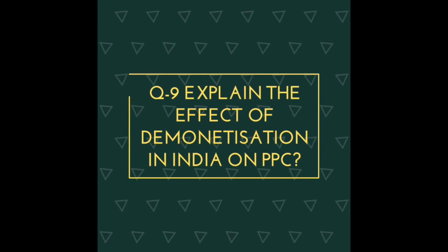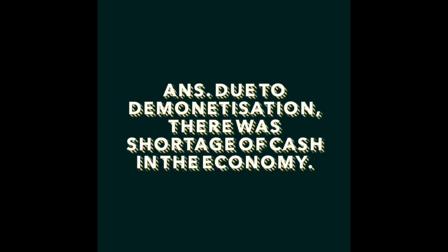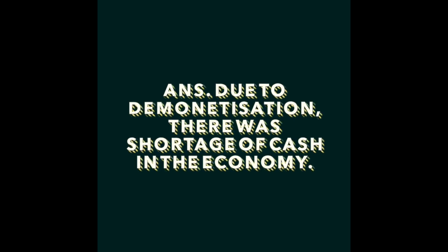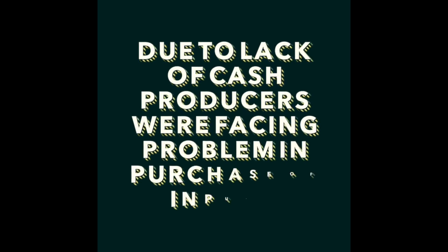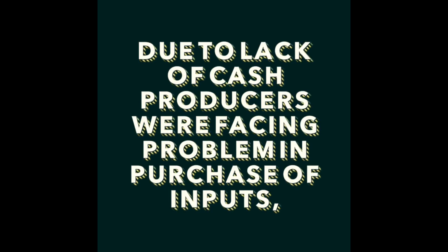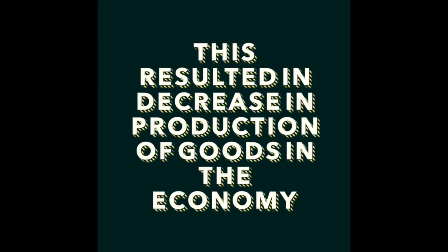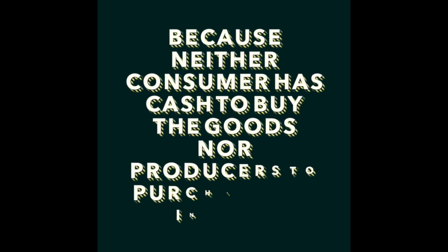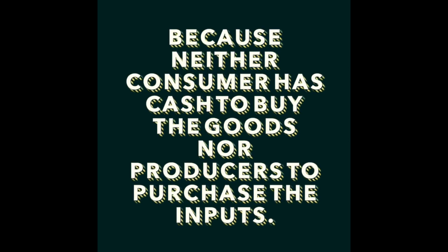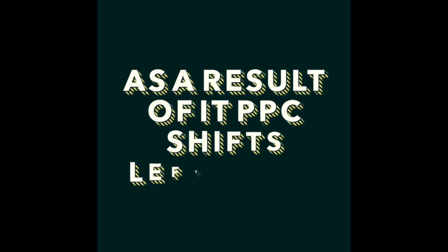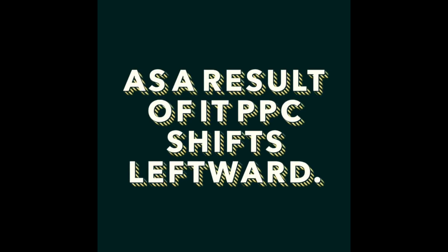Question number nine: explain the effect of demonetization in India on PPC. Due to demonetization, there was a shortage of cash in the economy. Due to lack of cash, producers were facing problems in the purchase of inputs. This resulted in a decrease in production of goods, as neither consumers had cash to buy goods nor producers to purchase inputs. As a result, the PPC shifts leftward, as shown in this diagram.